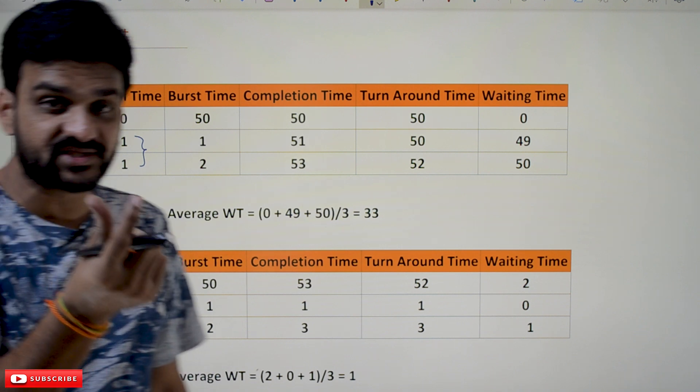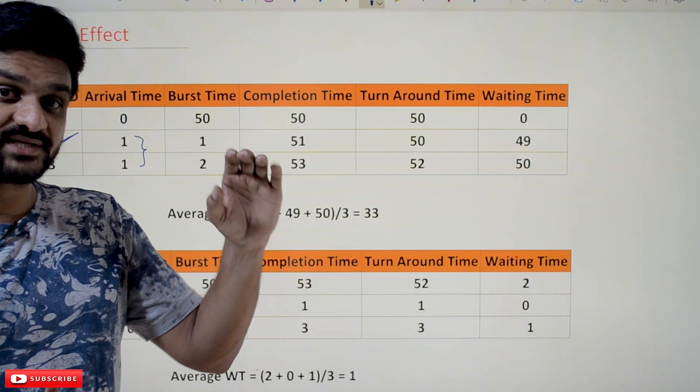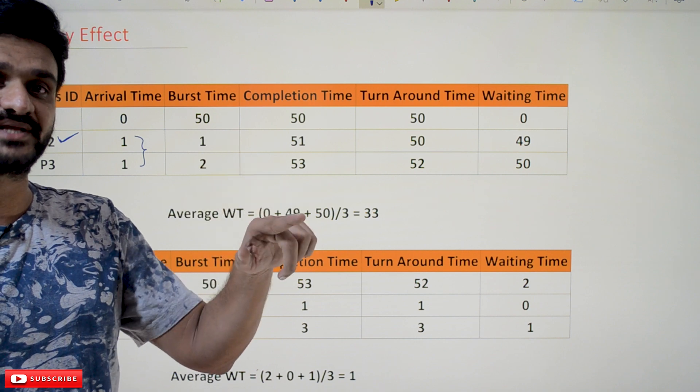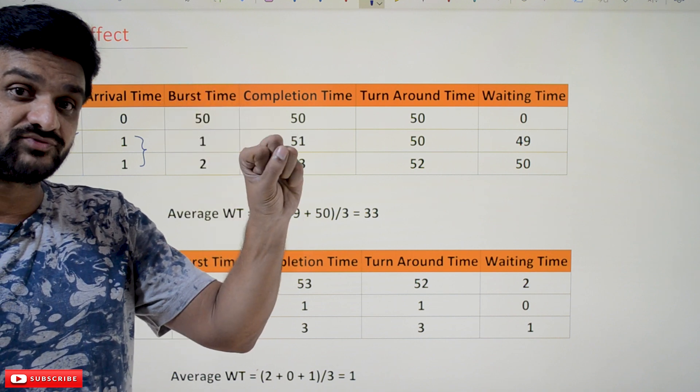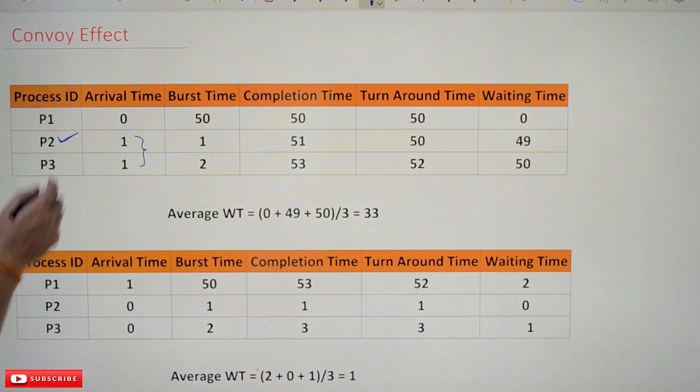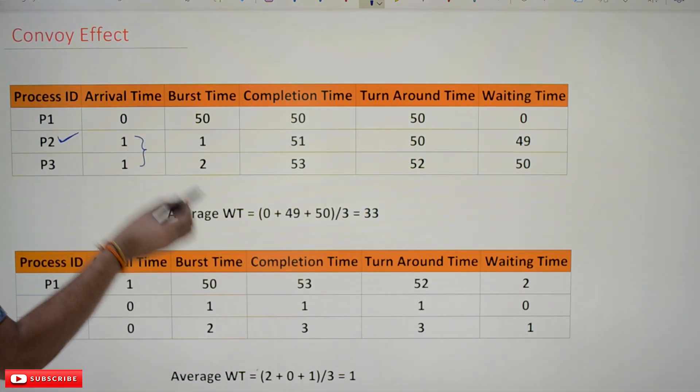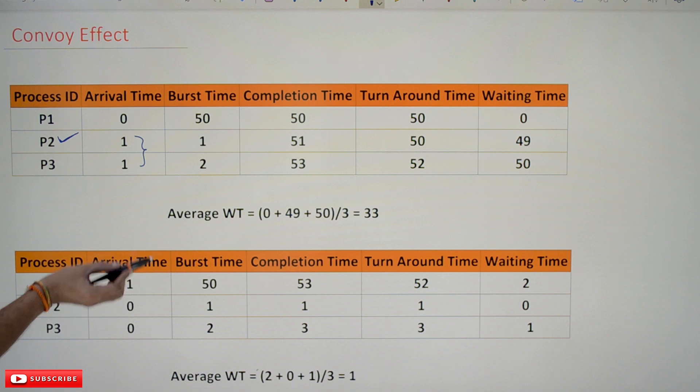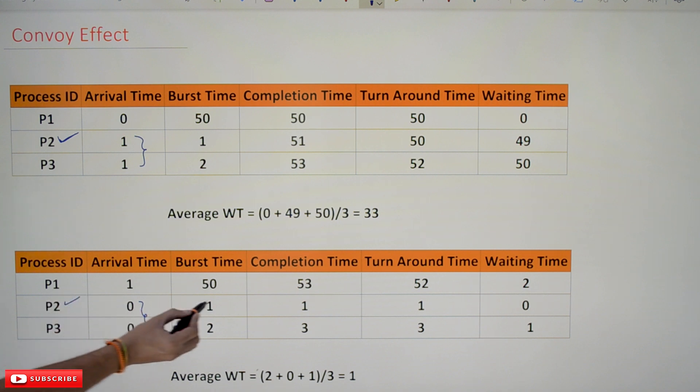So we are going to choose process P2 based upon the process ID. P2 is lesser than P3 (2 is less than 3), so P2 we are going to fetch and switch it onto the CPU. Now here the average time is 33. Similarly, if you consider this example, here the arrival time of these two processes is 0. Now P2 will be fetched and this one will get executed, and the burst time of this process is very less.